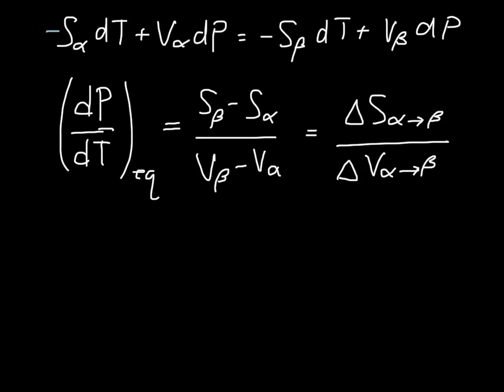Now delta V of this phase change is usually something that's reasonably easy to calculate. Delta S we can calculate, but this is not what's normally tabulated. What's normally tabulated for these phase changes is delta H. And at the transformation, we know that delta G equals zero.